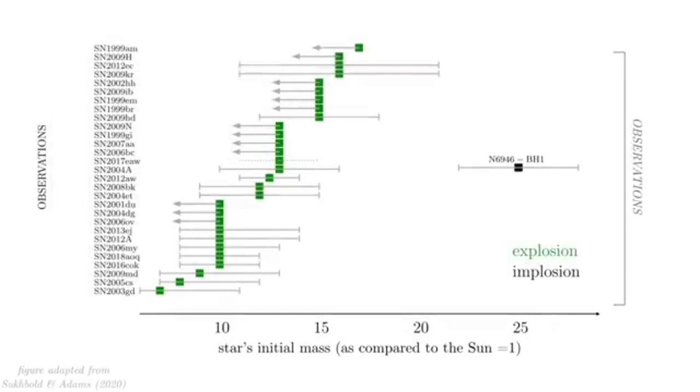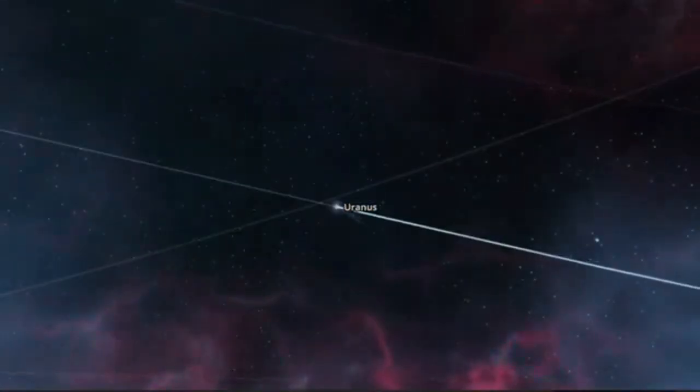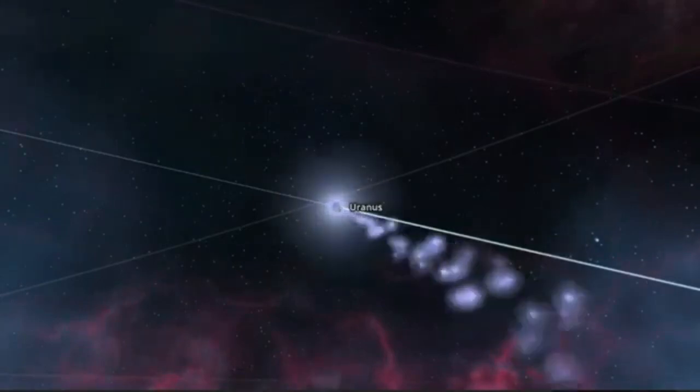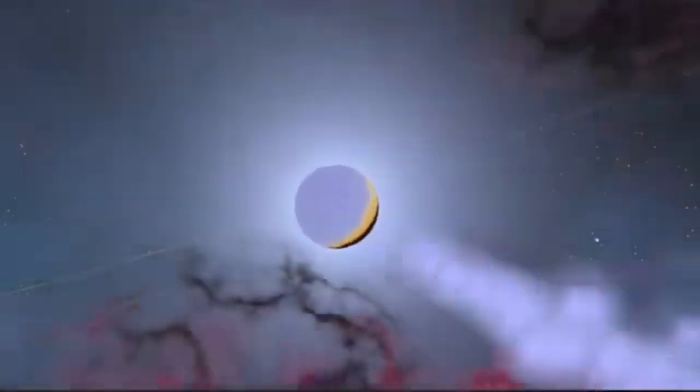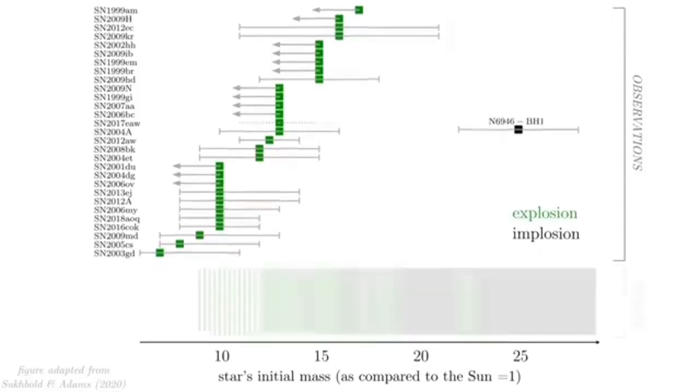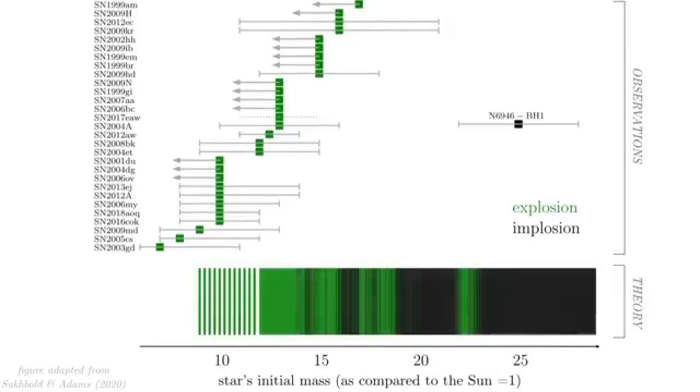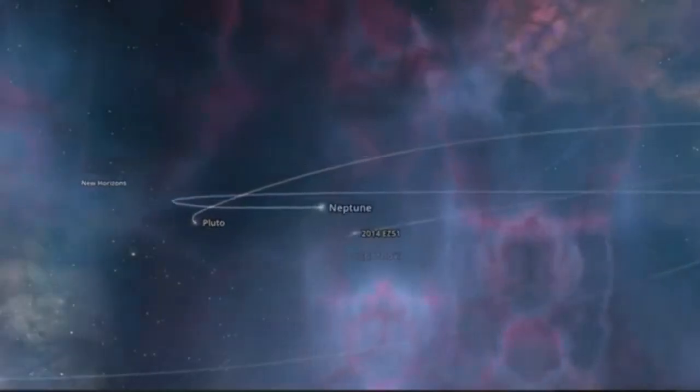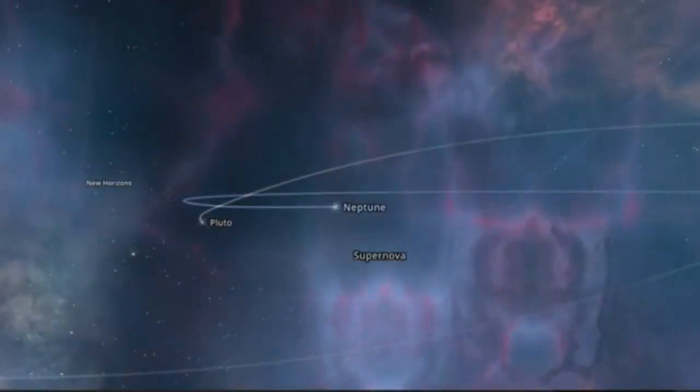In the vastness of space, Betelgeuse is just one of countless stars. But right now, it has captured our attention like few others ever have. Its unpredictability, its scale, and now the discovery of its companion make it one of the most studied and mysterious objects in our night sky. As the years unfold, astronomers will continue their vigil, waiting patiently for that moment when the sky changes forever. When Betelgeuse, the red giant of Orion, finally bursts into a spectacular farewell. Hit that subscribe button, share your thoughts below, and let's keep exploring together. Thanks for watching.